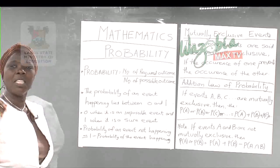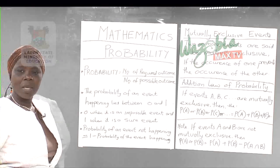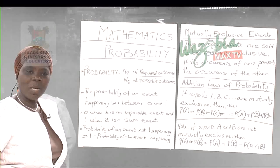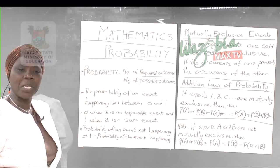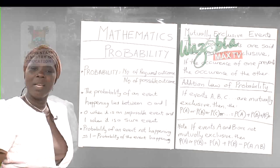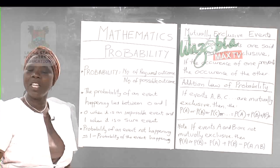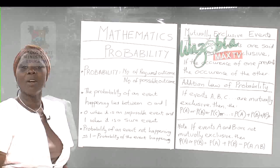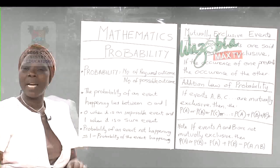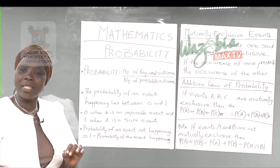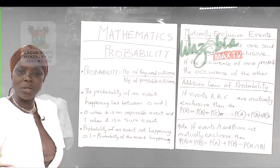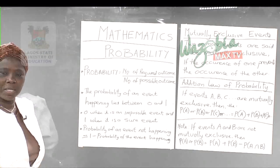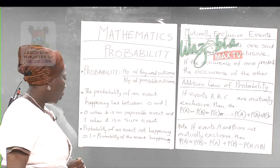The probability is one when it is a sure event. If I toss a coin, what is the probability of getting either a head or a tail? Definitely one has to come out — a fair coin has a head and a tail, so once you toss it, one of them will come out. That is the sure event, and the probability of that is one.